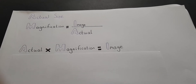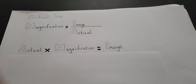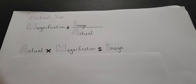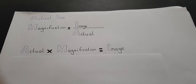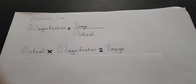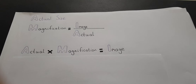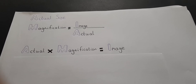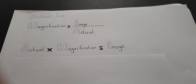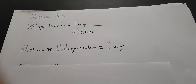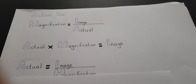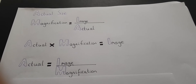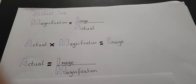So you multiply both sides by the actual size. The actual size times the magnification equals the image size, and then you need to get the actual size on its own on one side of the equation. So you divide both sides by magnification, and it comes out as: actual size equals image size divided by the magnification.